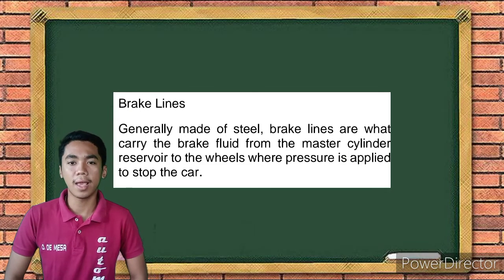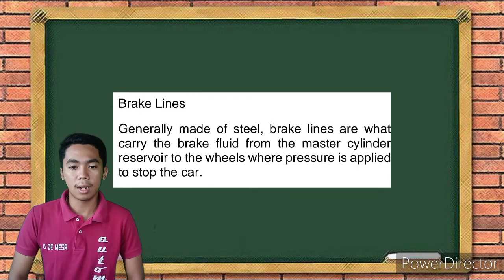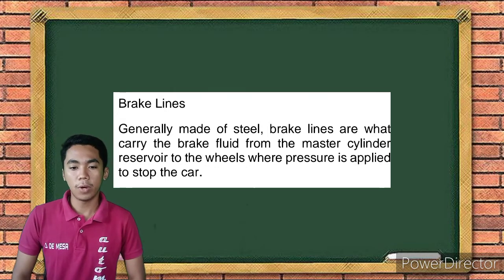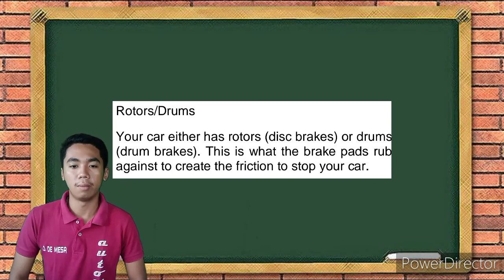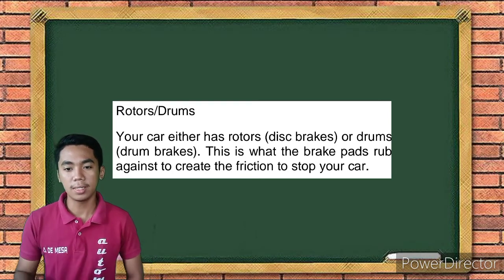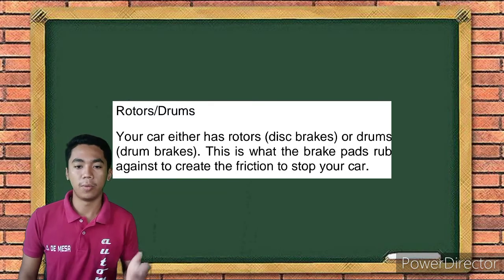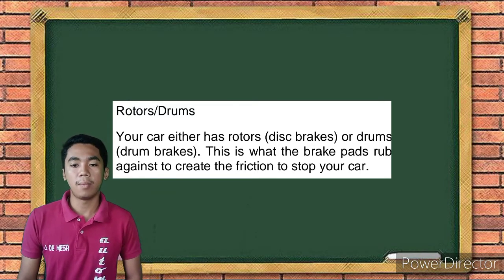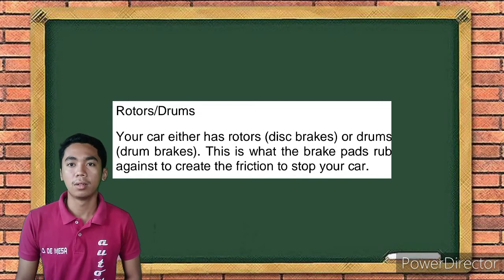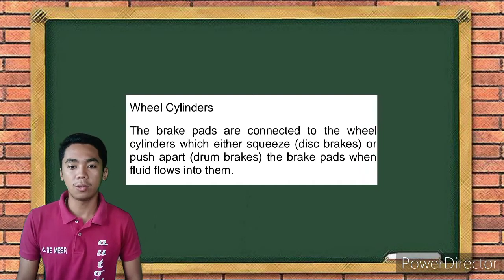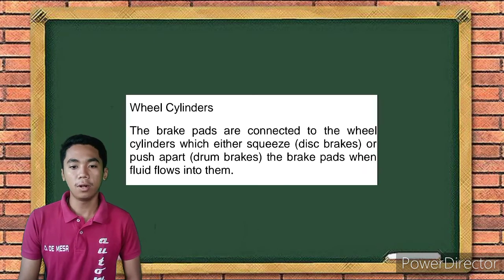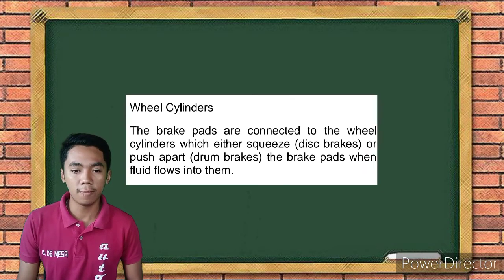Next part is the brake lines. Generally made of steel, brake lines carry the brake fluid from the master cylinder reservoir to the wheels where pressure is applied to stop the car. Next part is the rotors or drums — your car either has rotors for disc brakes or drums for drum brakes. This is what the brake pads press against to create the friction to stop your car. Next part is wheel cylinders — the brake pads are connected to the wheel cylinders, which either squeeze for disc brakes or push apart for drum brakes, when fluid flows into them.